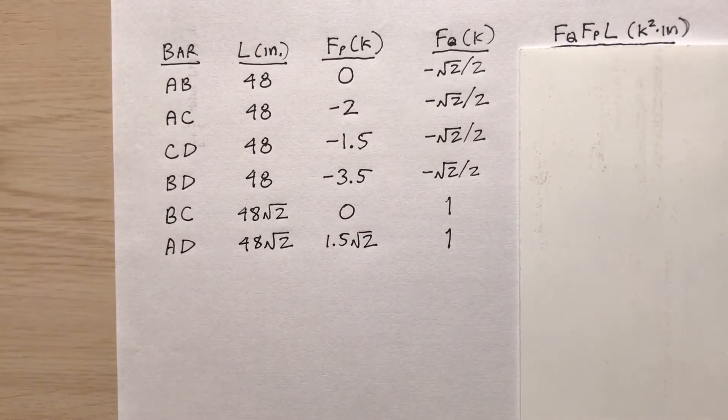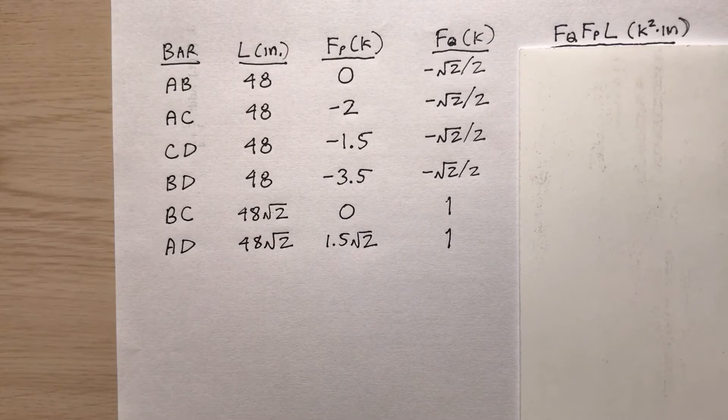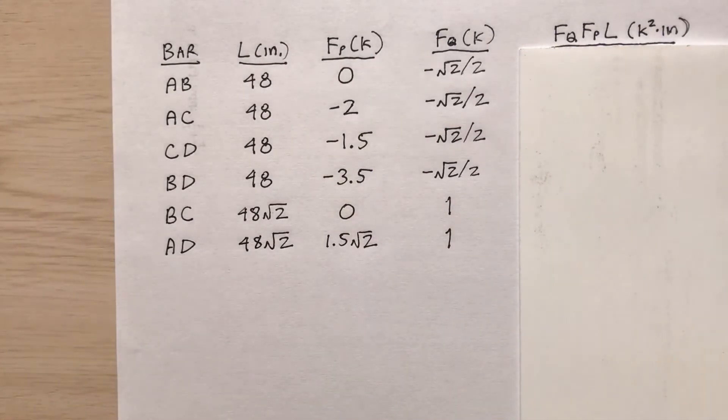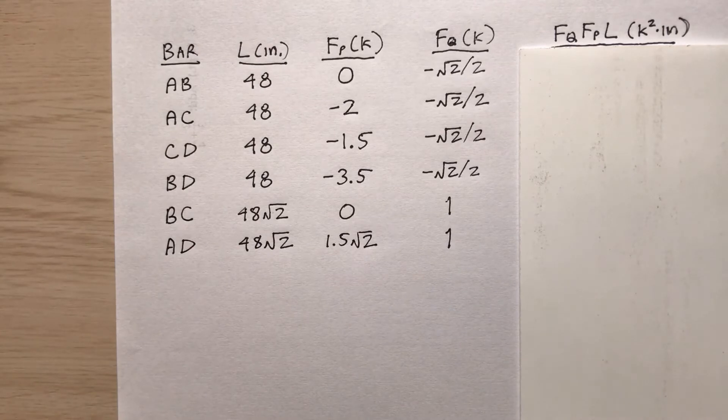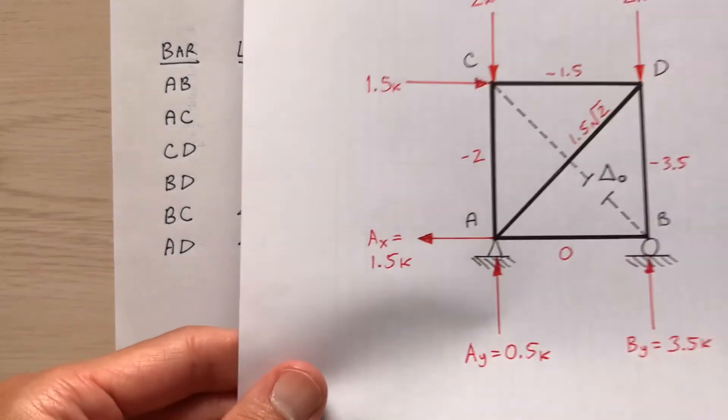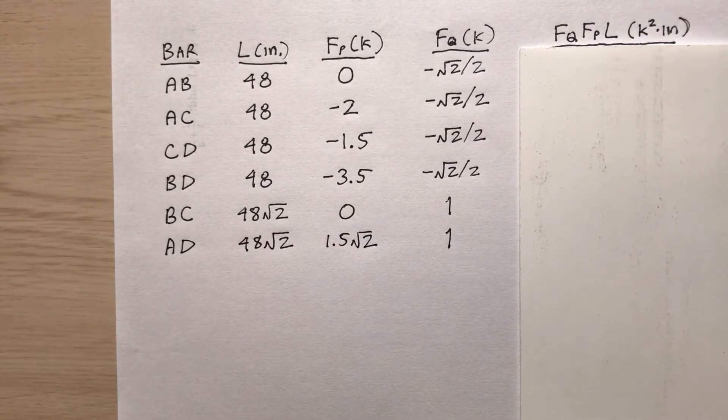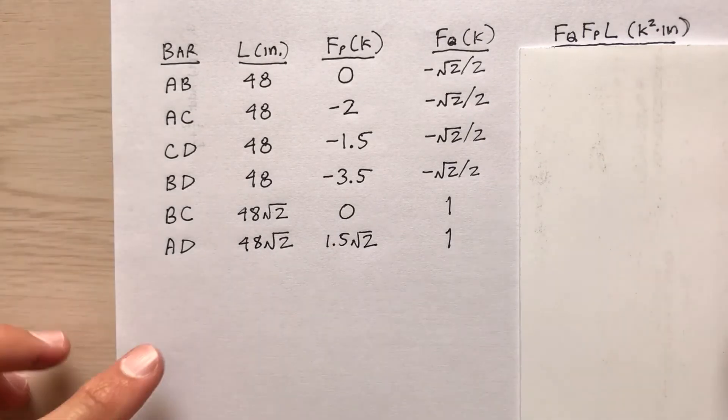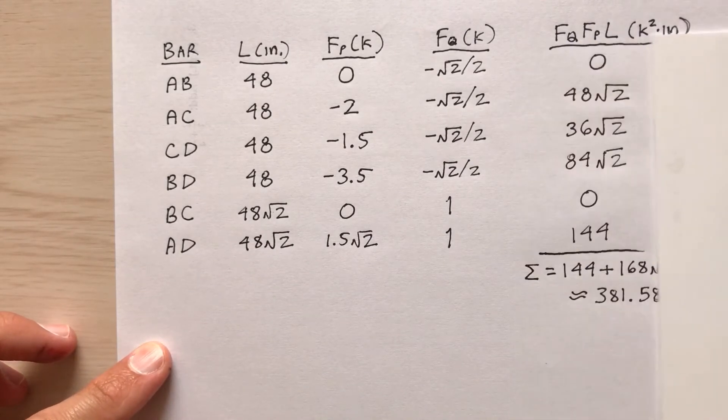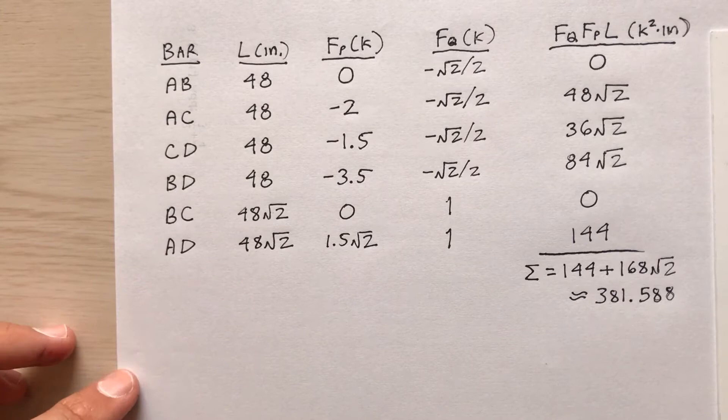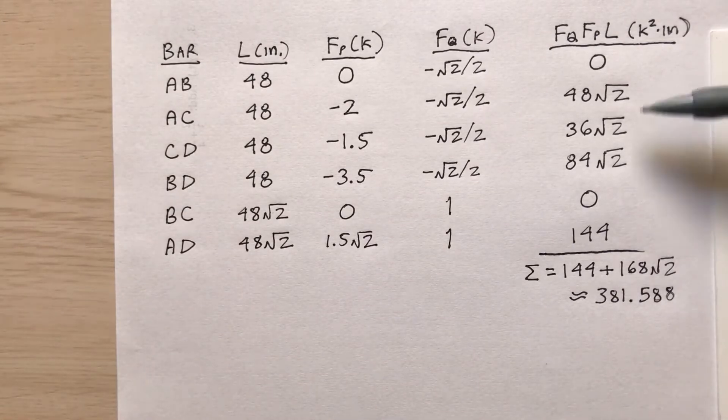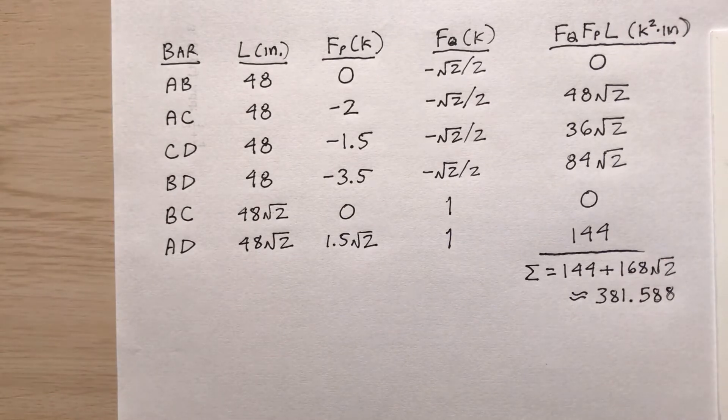And then the last column, F sub q times F sub p times L. This times this times this. So if you have a spreadsheet program, you can maybe program these into a spreadsheet. So what I'm looking for is the delta sub zero. That's what I'm trying to find, the delta sub zero using virtual work. Notice I don't bother showing the AE here. AE is constant, so I don't need to mention that until I stick them into the formula. So I come up with these figures. And notice that I keep it exact. So that would be the pure mathematician in me that wants to keep everything exact. I find the sum and it's about 381.588.